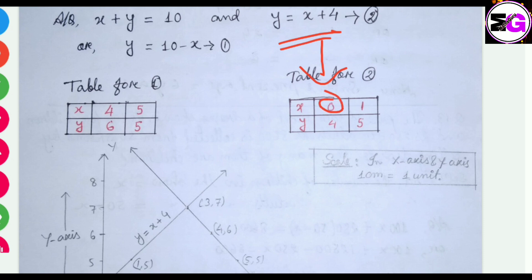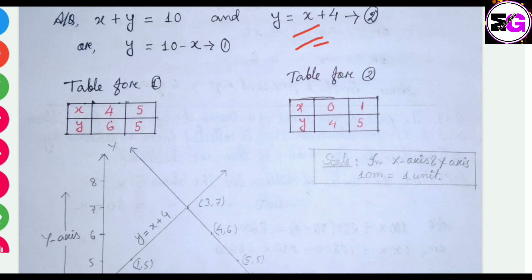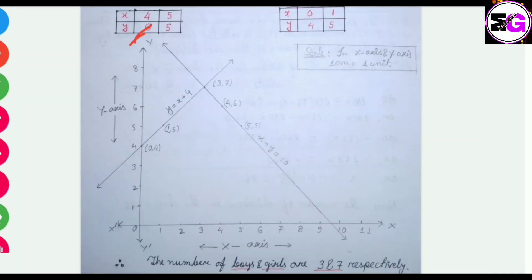For the second equation's table, if we put x equals 0, we will get y equals 4 because 0 plus 4 is 4. And if we put x equals 1, then 1 plus 4 is 5. So these are our points: (0, 4) and (1, 5).